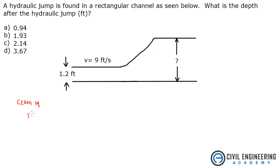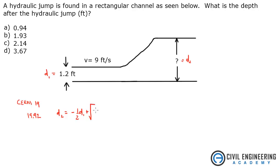I'm pulling from equation 19.92 in the edition I'm using. It basically states that d2 — that's what we want to find — with d1 being the upstream depth. d2 equals negative one-half d1 plus the square root of 2v1 squared times d1 divided by g, plus d1 squared over 4.